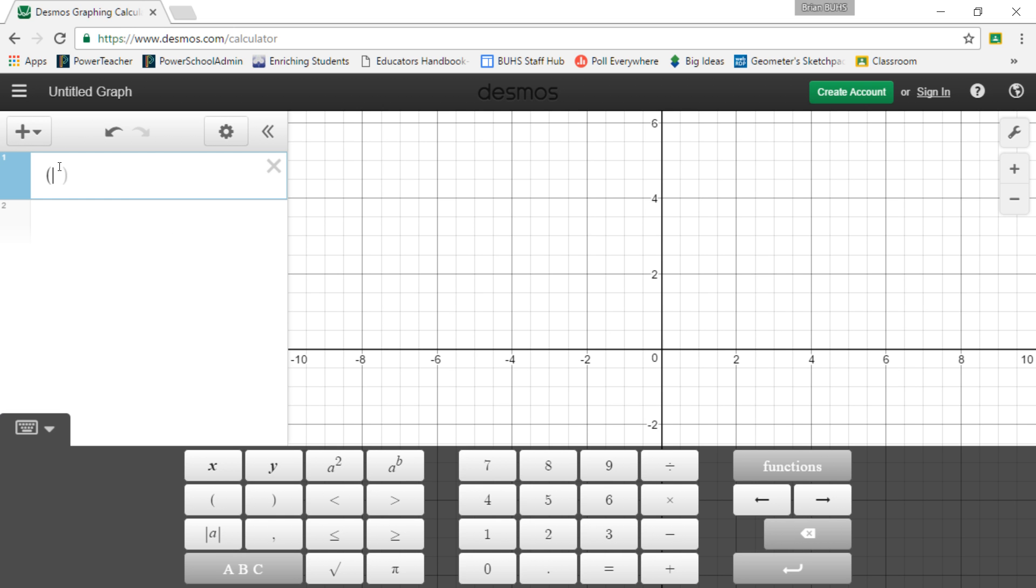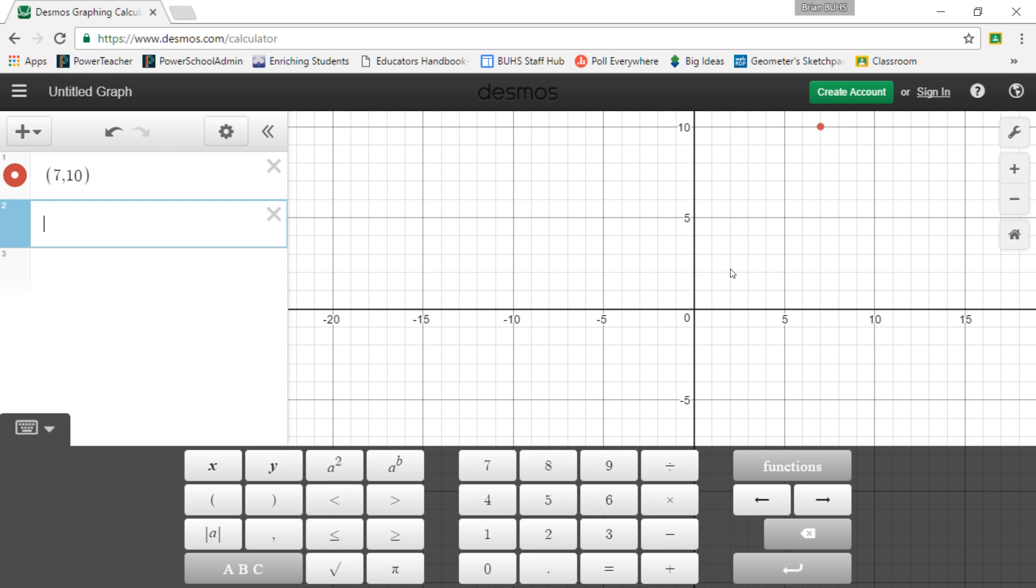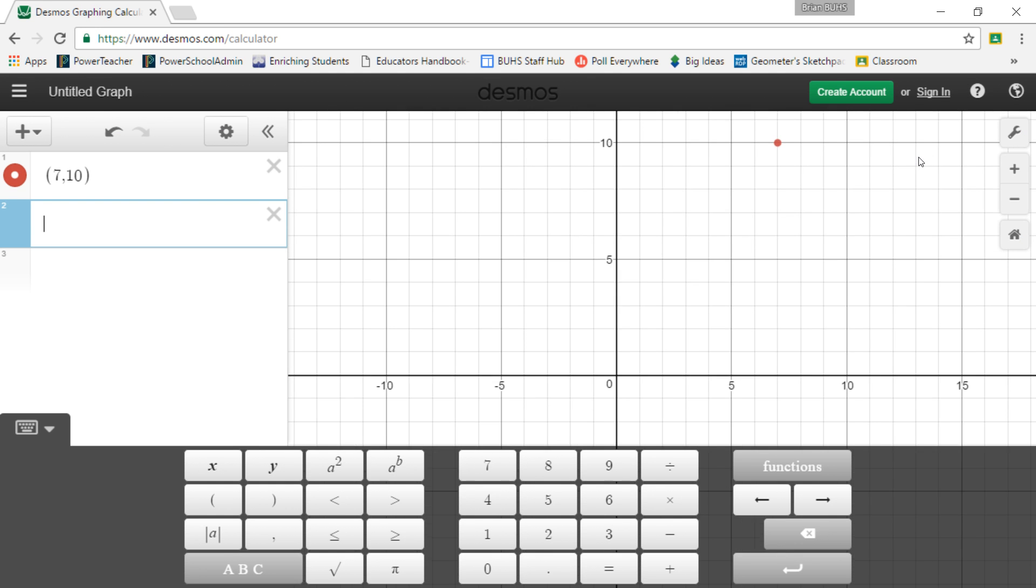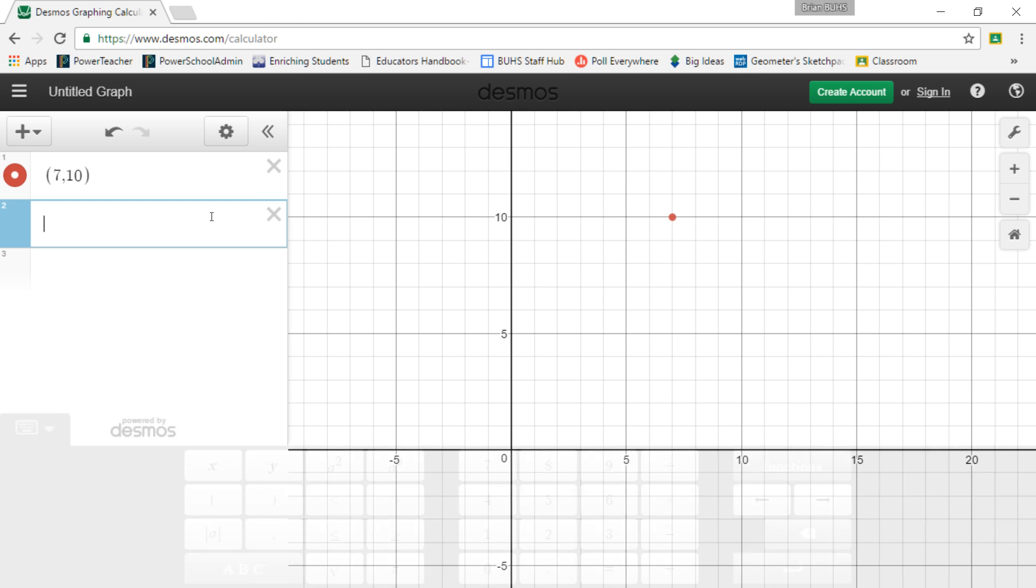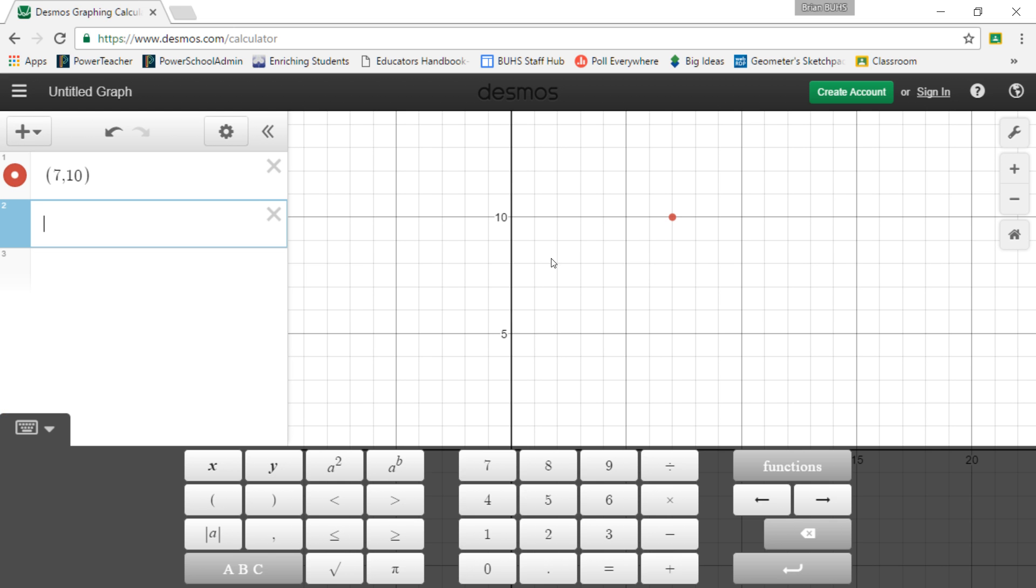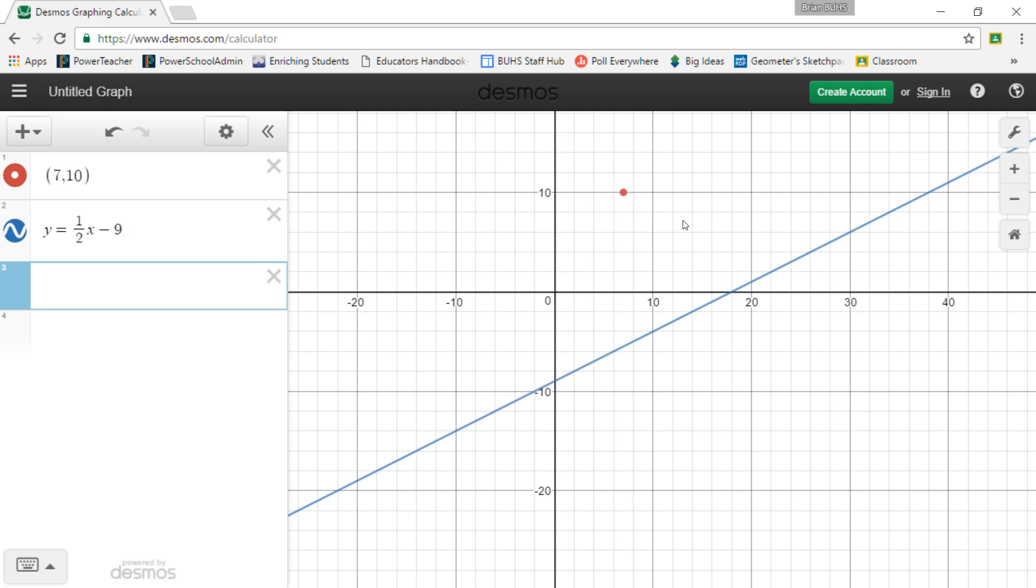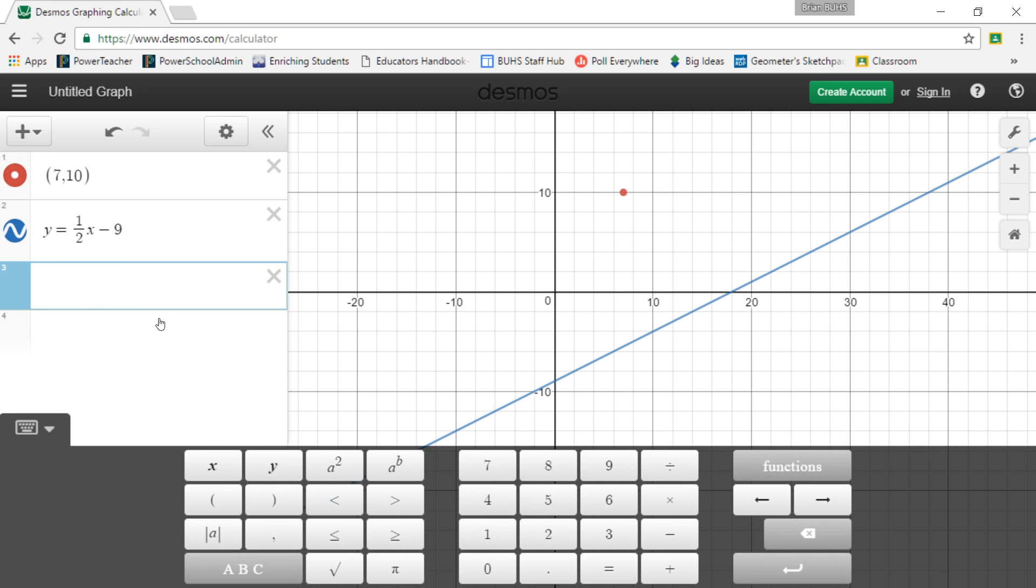And so let's see seven comma 10 was the point, seven comma 10. So over seven up 10. There it is. And let's see the line they gave us was Y equals one half X minus nine. And yeah, I'll have to zoom out a little bit there to show that. So I'm looking for perpendicular. So it's going to be somewhere like that. Let's see if our line actually worked out.